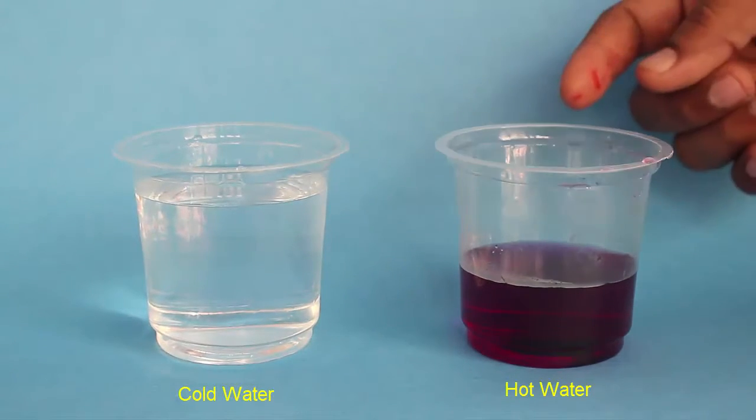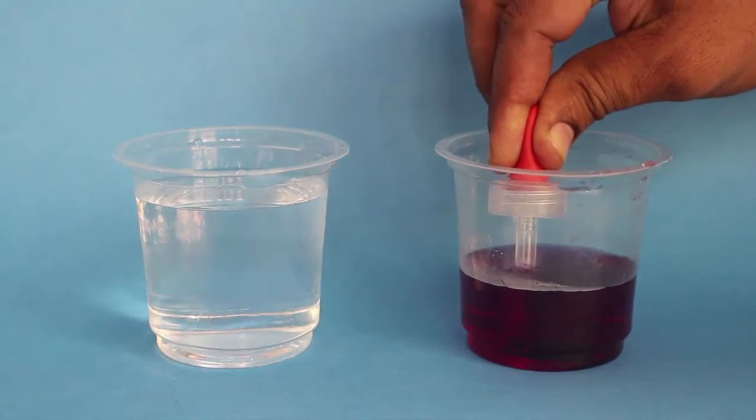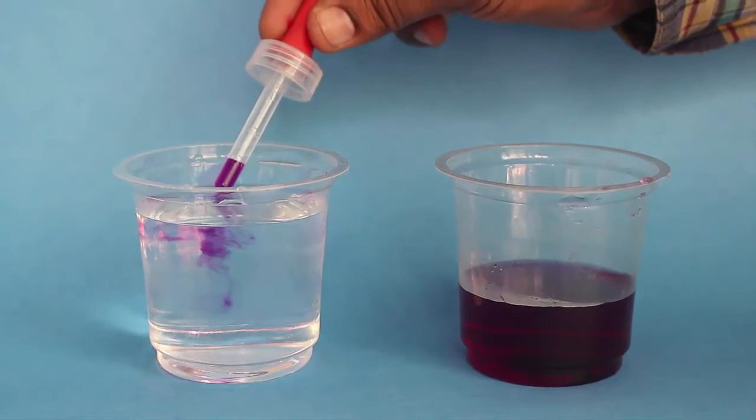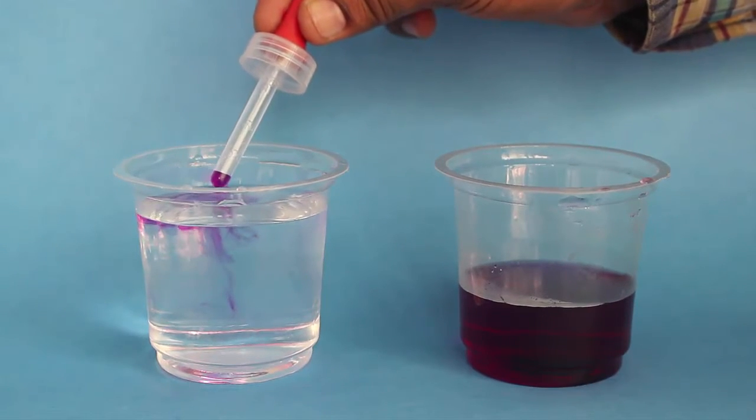Here we will test the density of cold water and colored hot water. Take a few drops of hot colored water with a dropper and place them gently on the surface of the cold water.